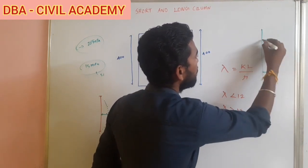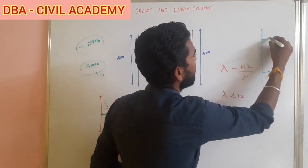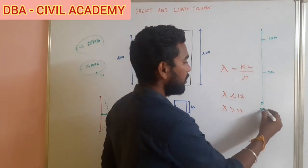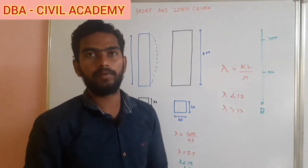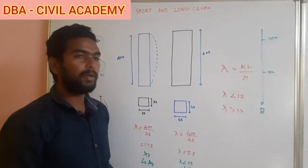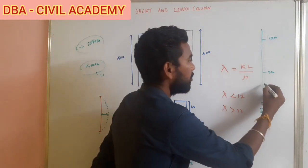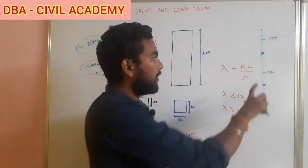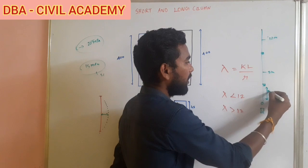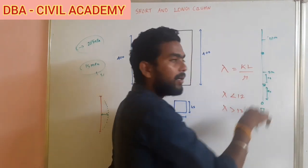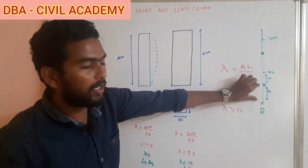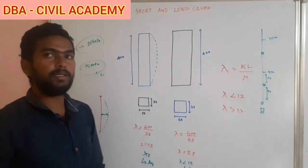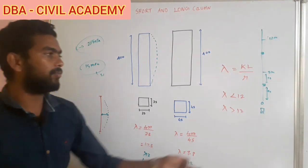For example, if you have a column of 5 meters or 10 meters with a cross-section of 23 by 23 — which makes it a long column — you can convert it to a short column by providing an intermediate tie beam. The tie beam reduces the effective length of the column. So 10 meters becomes 2.5 and 2.5. With this intermediate support, you lower the effective length, making it a short column, which is the most economical solution.